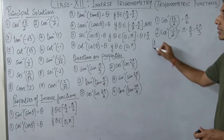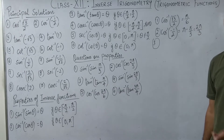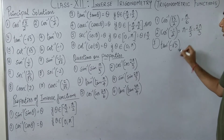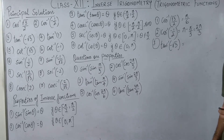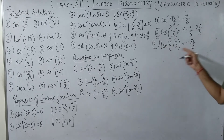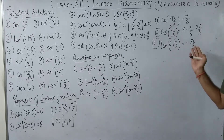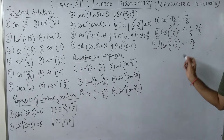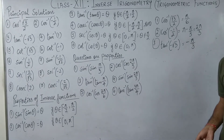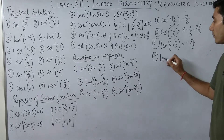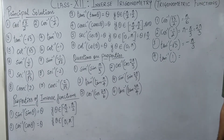Question three: tan⁻¹(-√3). No complex thinking needed. tan(60°) = √3, so 60° = π/3. For tan, the range is minus π/2 to π/2. Since the value is negative, the answer is simply minus π/3. Question four: tan⁻¹(1). Since tan(45°) = 1, and 45° = π/4 is positive and within range, the answer is directly π/4.